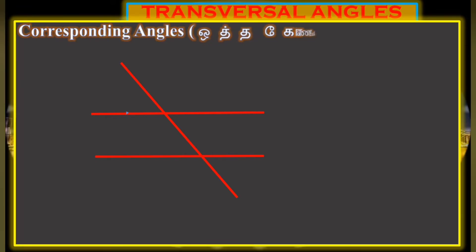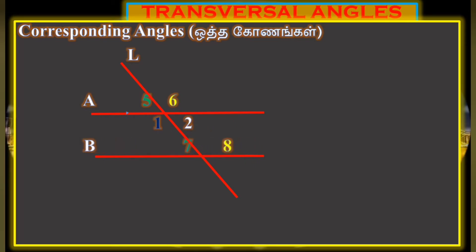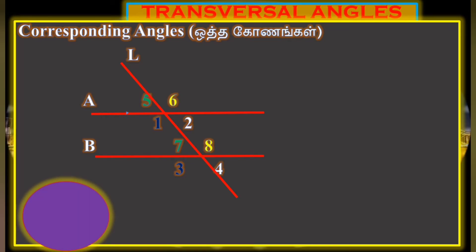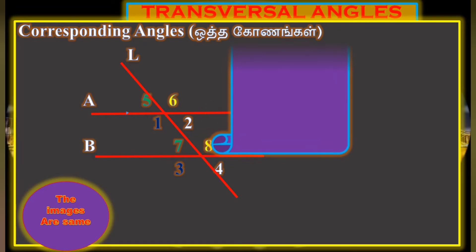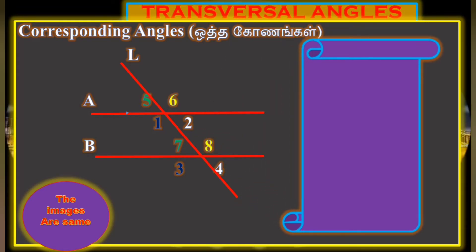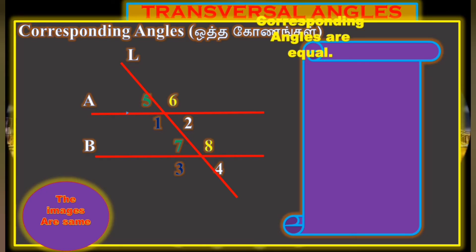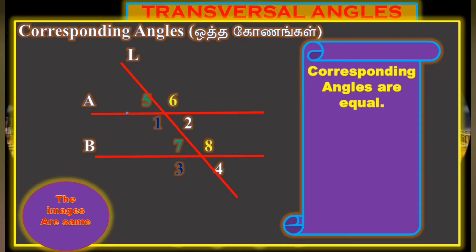Corresponding angles — that means corresponding angles. In a parallel line, looking at the figure with transversal and parallel lines A and B: angle 1 and angle 3 are corresponding angles. In parallel line, angle 2 and angle 4 are also corresponding angles. Next, angle 5 and angle 7 are corresponding.